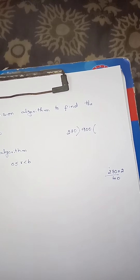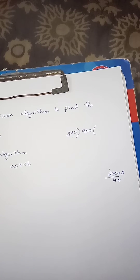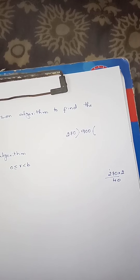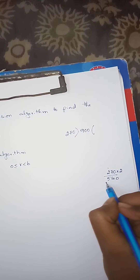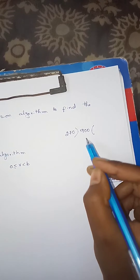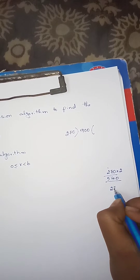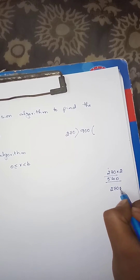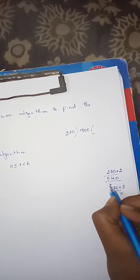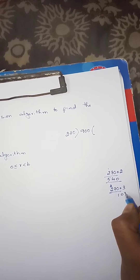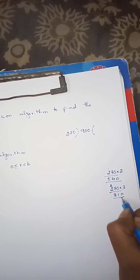Continuing the division: 2 into 2 is 4, 4 plus 1 is 5, giving 40. Next, 3 times: 2 into 17 gives 3 times result 21, 3 into 2 is 6, 7, 8, giving 810.